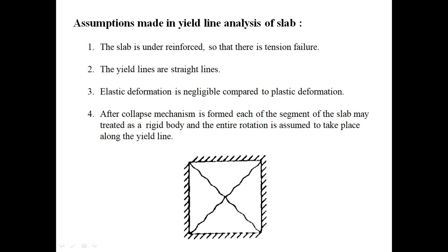Fourth assumption: after the collapse mechanism is formed, each segment of the slab may be treated as a rigid body and the entire rotation is assumed to take place along the yield lines. The slab at collapse load is converted into four segments — one, two, three, and four — divided by yield lines. These yield lines are called the axis of rotation. Segments one and two will rotate against their respective axis.